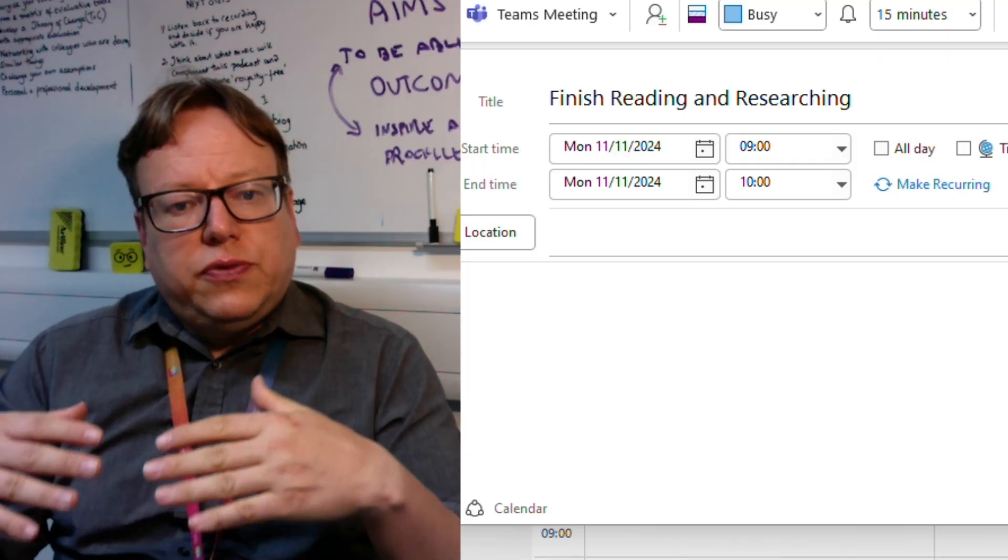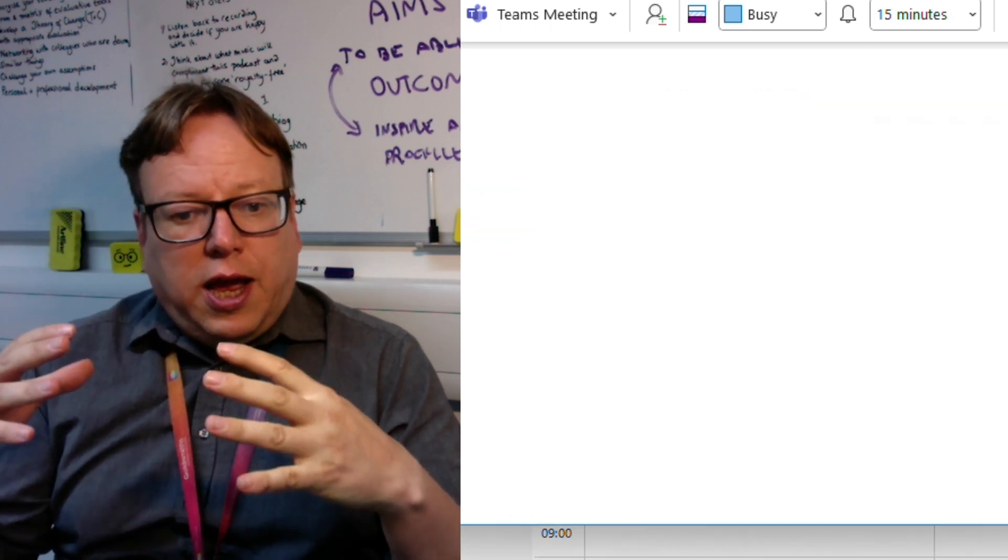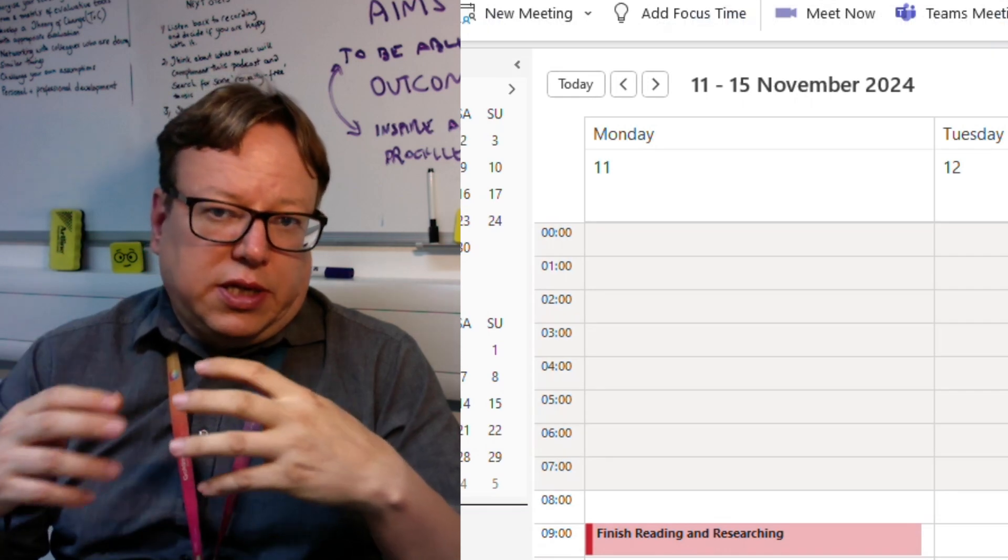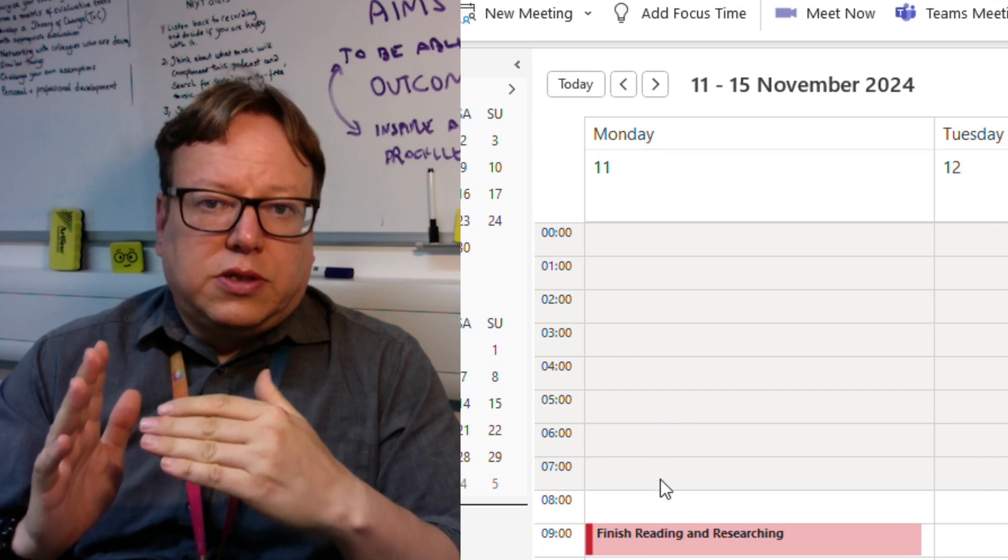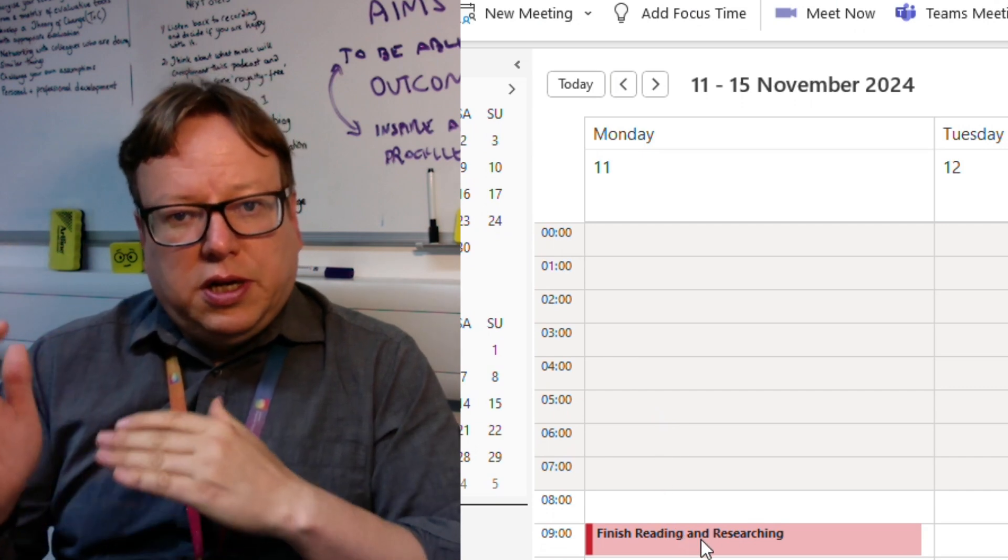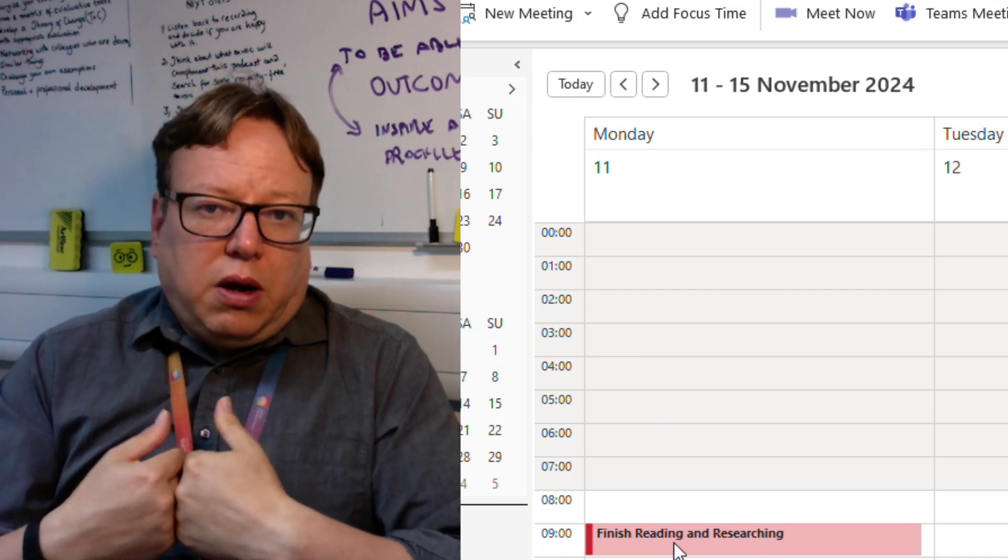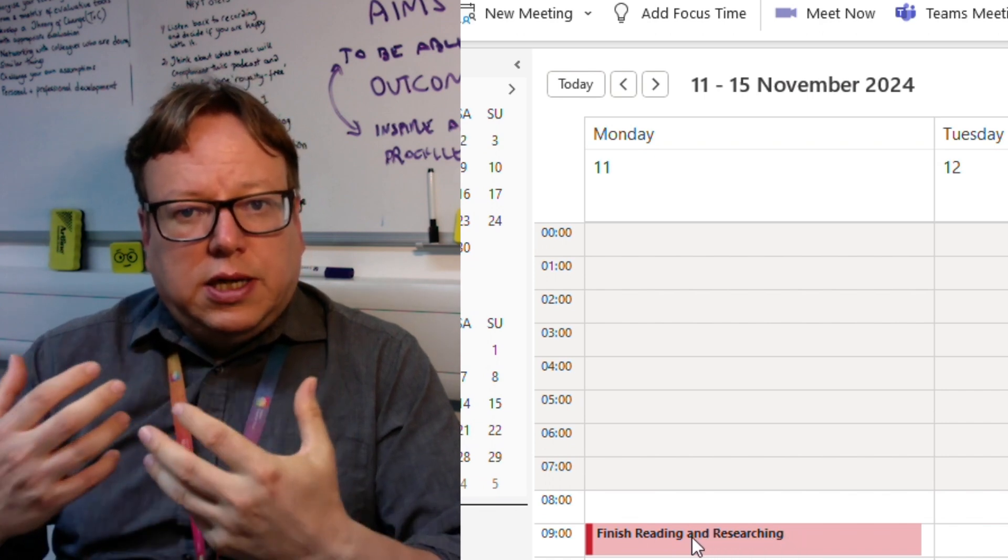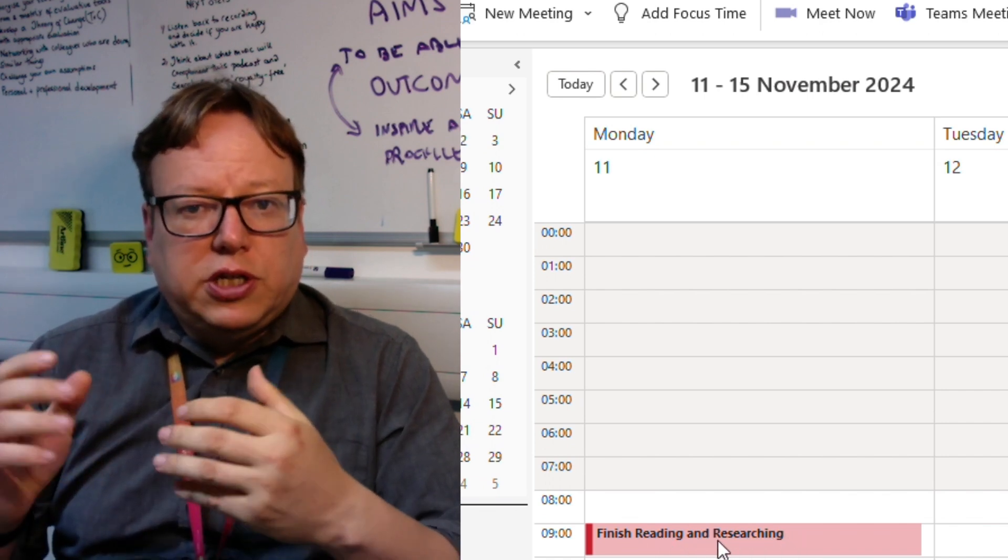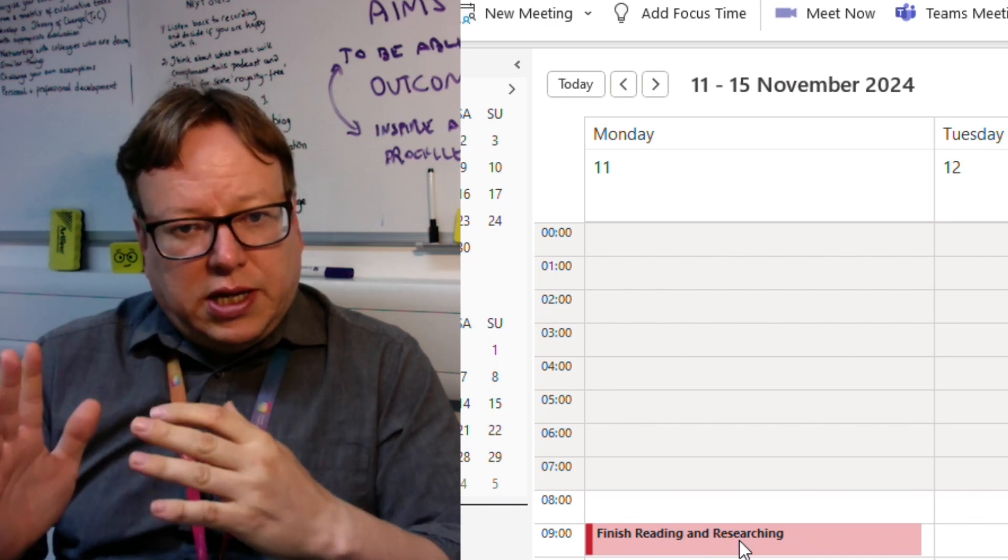So each of these parts of the process that you've broken down can have a deadline set against them. So you will achieve this particular section by this particular time. For example, you might say, I want to put into my calendar a deadline for myself for finishing the reading and researching section, and I'm going to do that by this date.